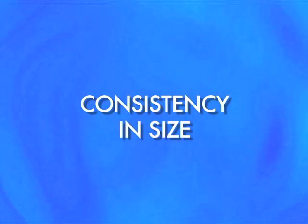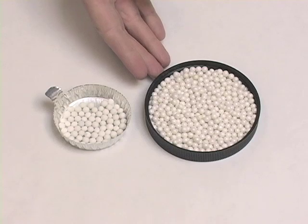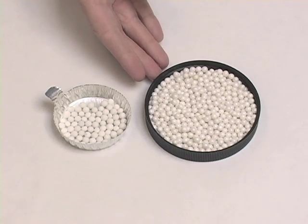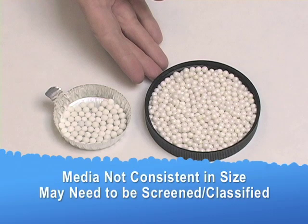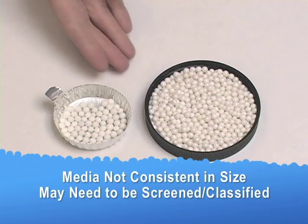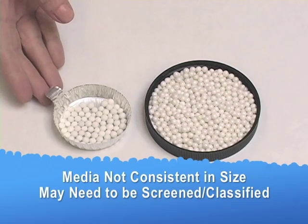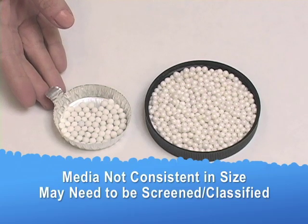Although it isn't always the case, ideally you want to have consistent size when choosing a particular media. Due to the manufacturing process, consistency is not always possible. Therefore, in some cases the media must be classified or screened before being used to assure consistency in size.